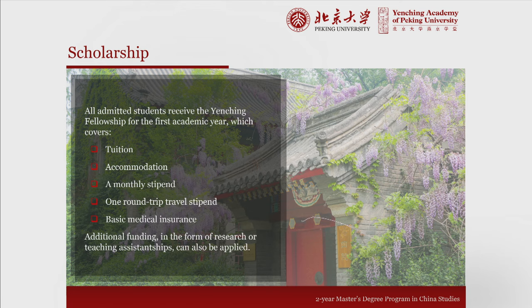Ideally, travel funding covers coming to Beijing at the beginning of the program and leaving upon graduation two years later. But if you need to leave at the end of the first year, we will pay for that return trip. You are responsible, however, for getting yourself back to Beijing for your second year. We also offer basic medical insurance specifically designed for international students as they live and study in China.